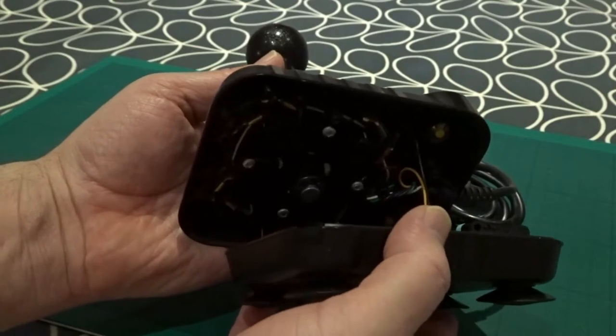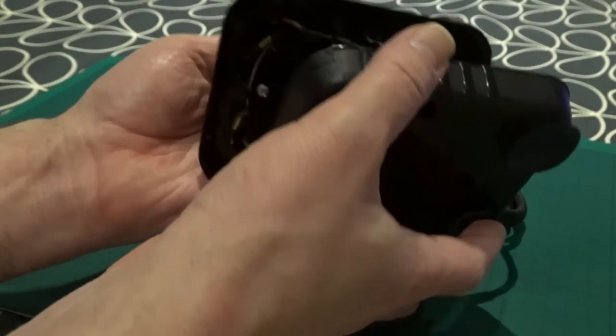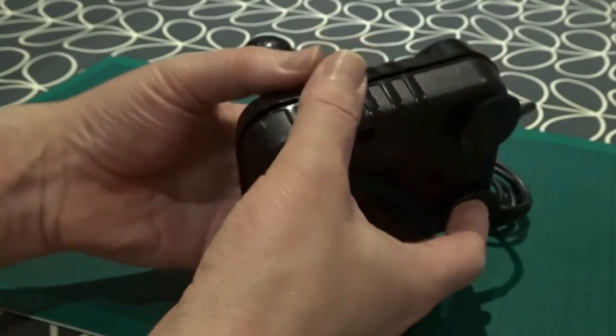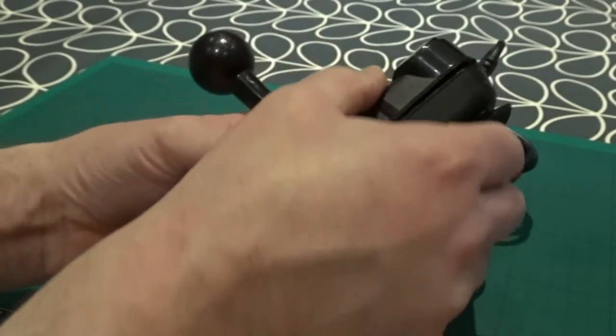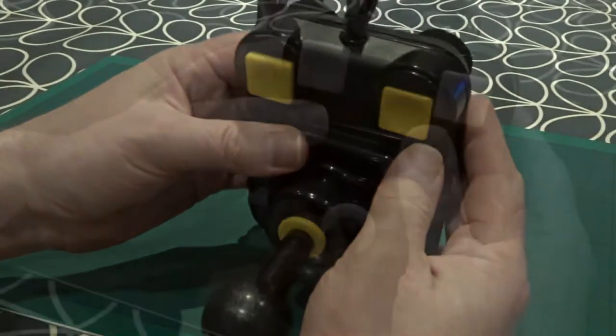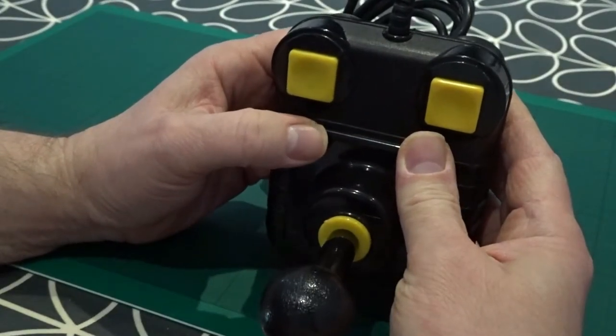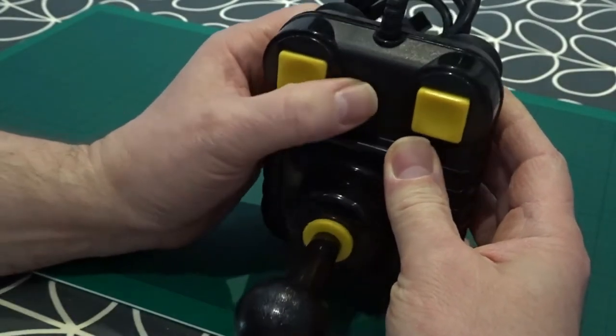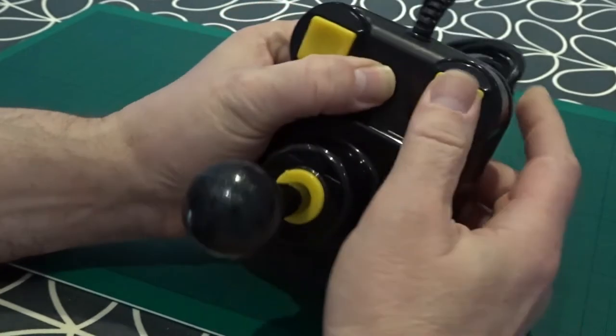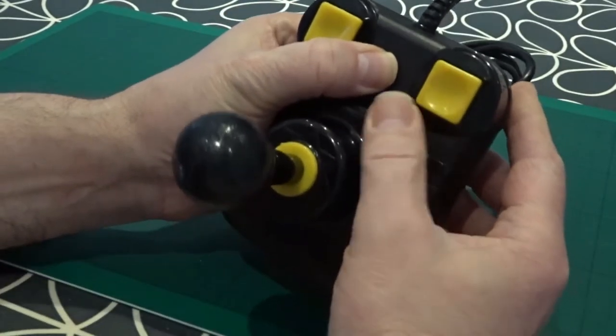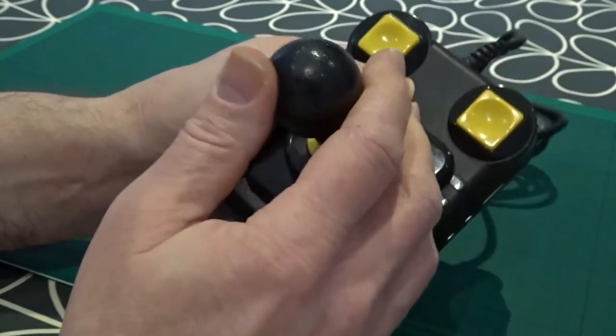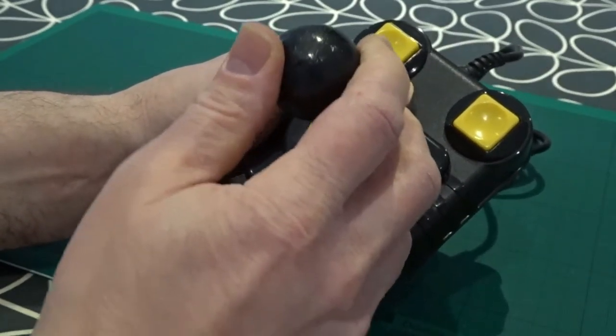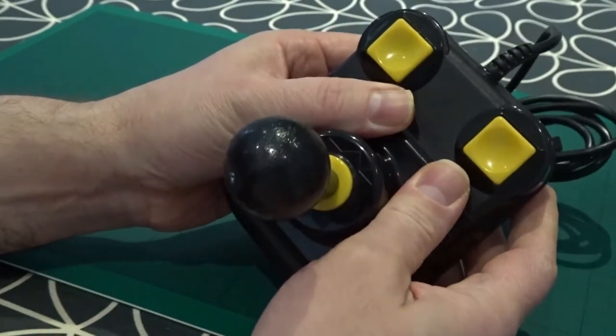Just one last check in there. That looks all good. Okay let's put those two halves back. And just squeeze them home. Test the buttons are working. So just squash the case together. Make sure my fire buttons are working. Good clicking sound there. Good clicking sound there. Just test the joystick. All four switches are clicking nicely. So that looks good.